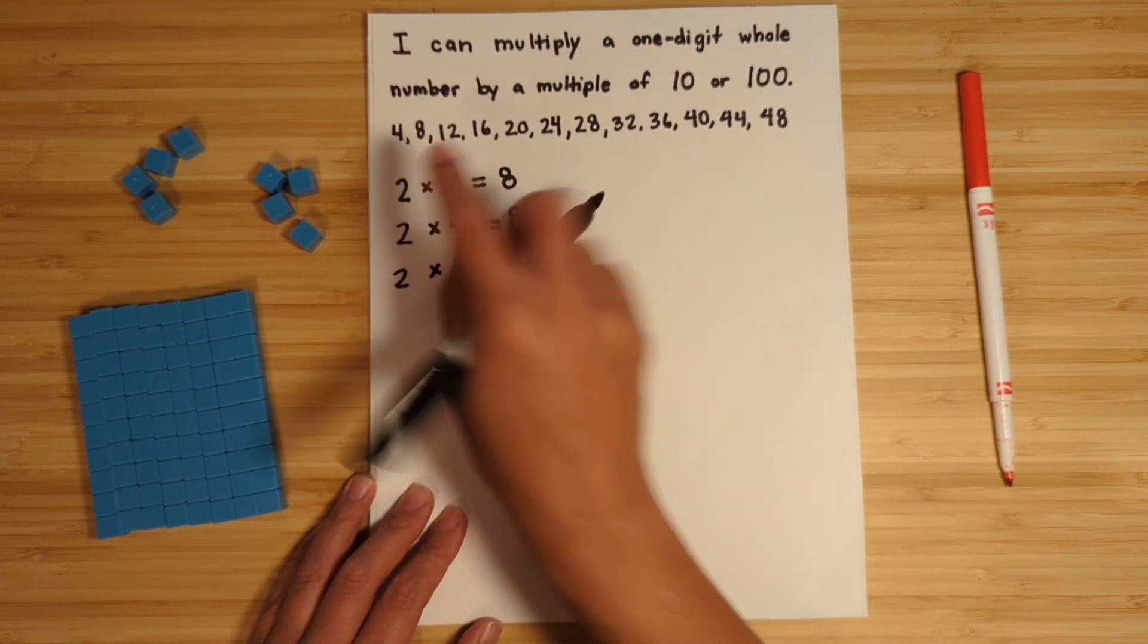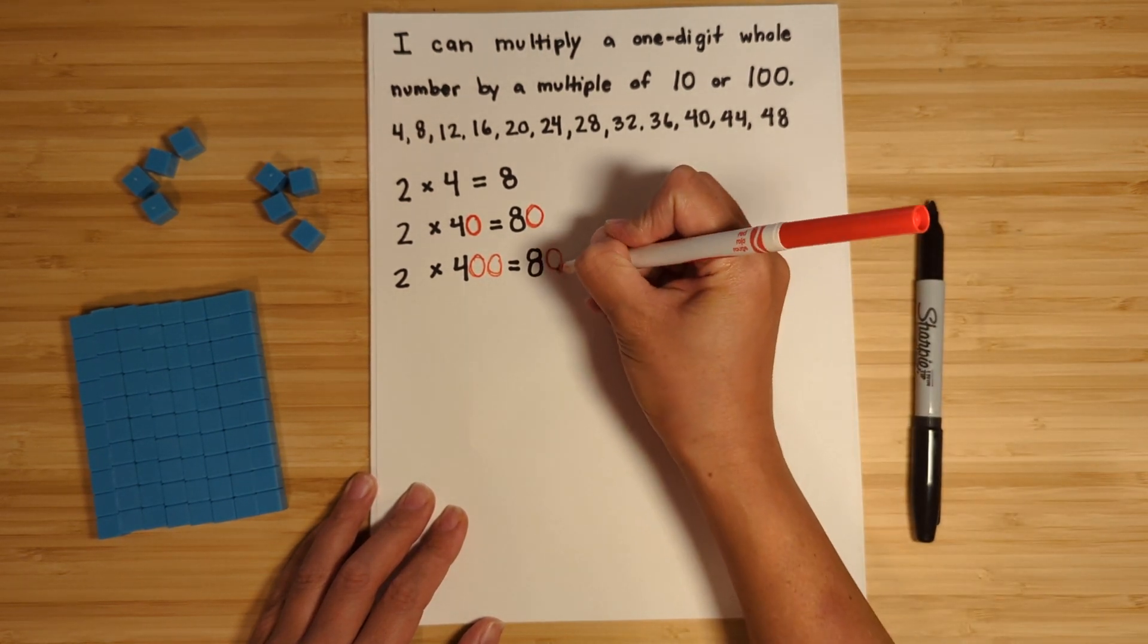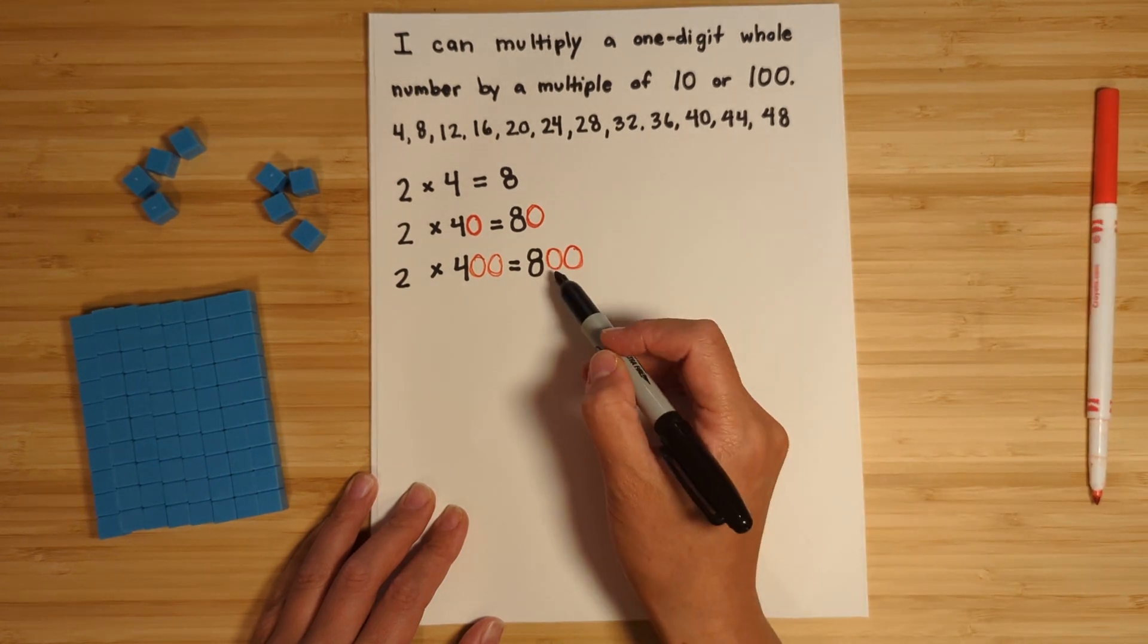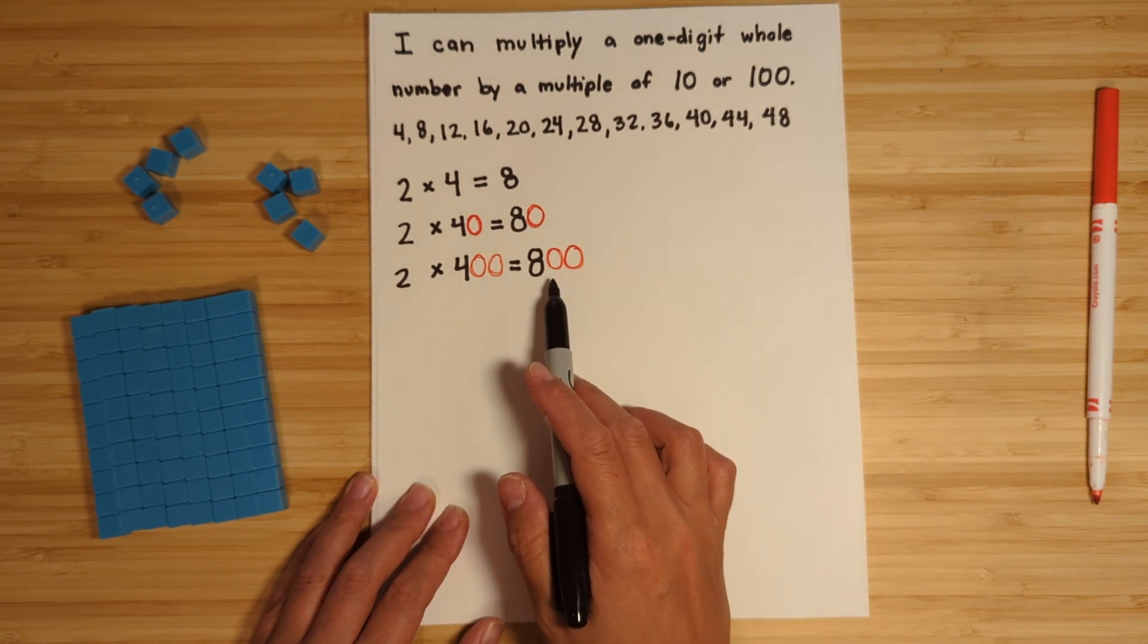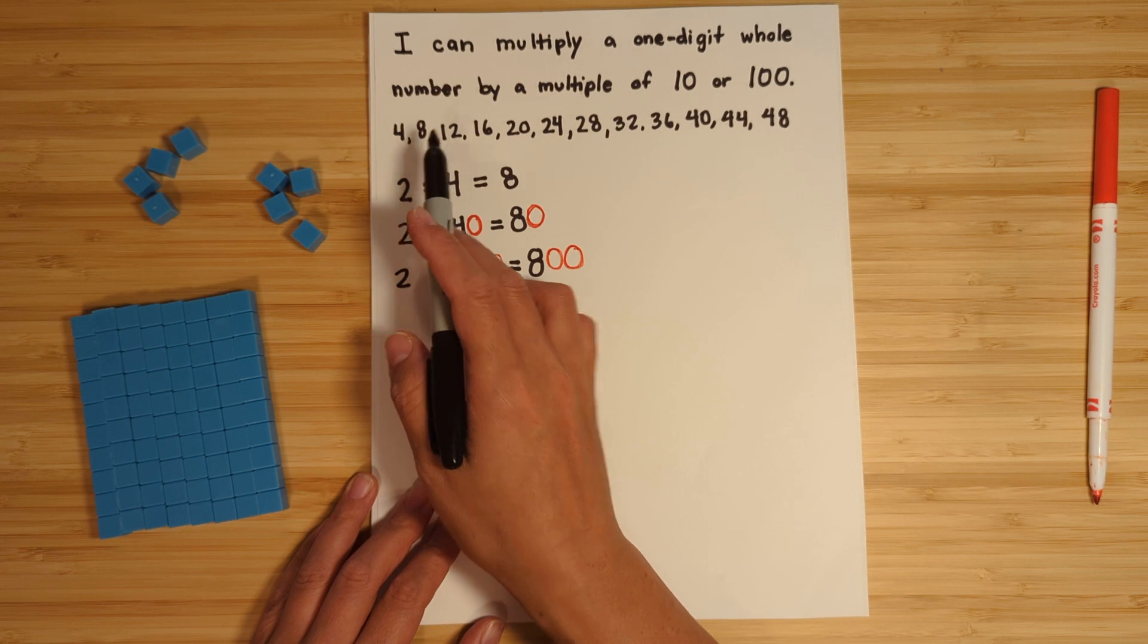Two groups of 400 is 800. Again, I got that because I know my multiples of four. I can skip count by four and I can just apply that with a larger value, right? 400, 800, 1200, 1600, and so on.